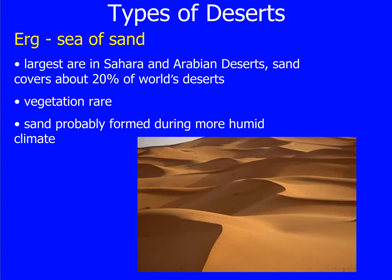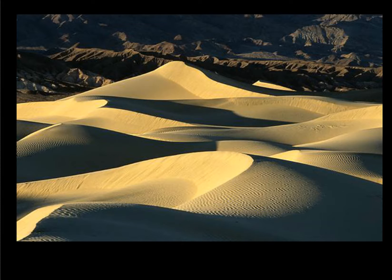There are several types of deserts. The first is the Erg, or the Sea of Sand. The largest of these are in the Sahara and the Arabian deserts. Sand covers about 20% of the world's deserts. Vegetation is rare in this type of desert. The sand probably formed during a more humid climate. Large moving sand dunes form in this type of desert.